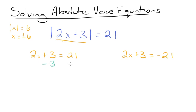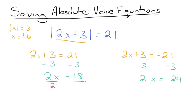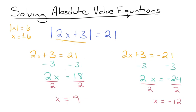We're going to start by subtracting 3 on both sides for both equations. This will give us 2x is equal to 18 on one side, and 2x is equal to negative 24 on the other. Then we'll divide both sides by 2 for both equations, giving us x is equal to 9 and x is equal to negative 12. However you want to solve these two equations is up to you — just use your normal equation solving techniques. Our solutions for this equation are x equals 9 and x equals negative 12.